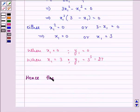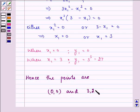Hence, the points are (0, 0) and (3, 27).